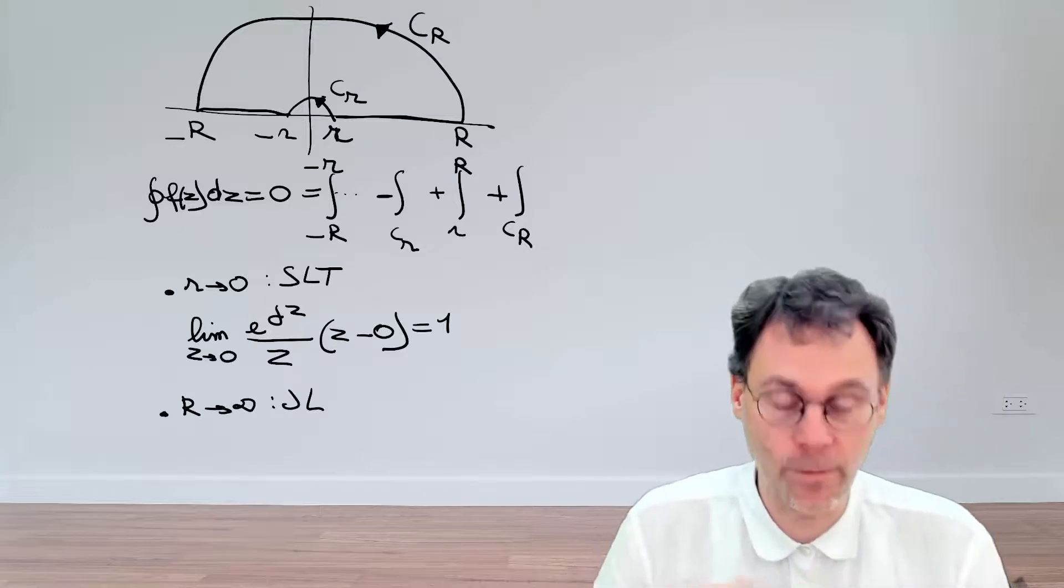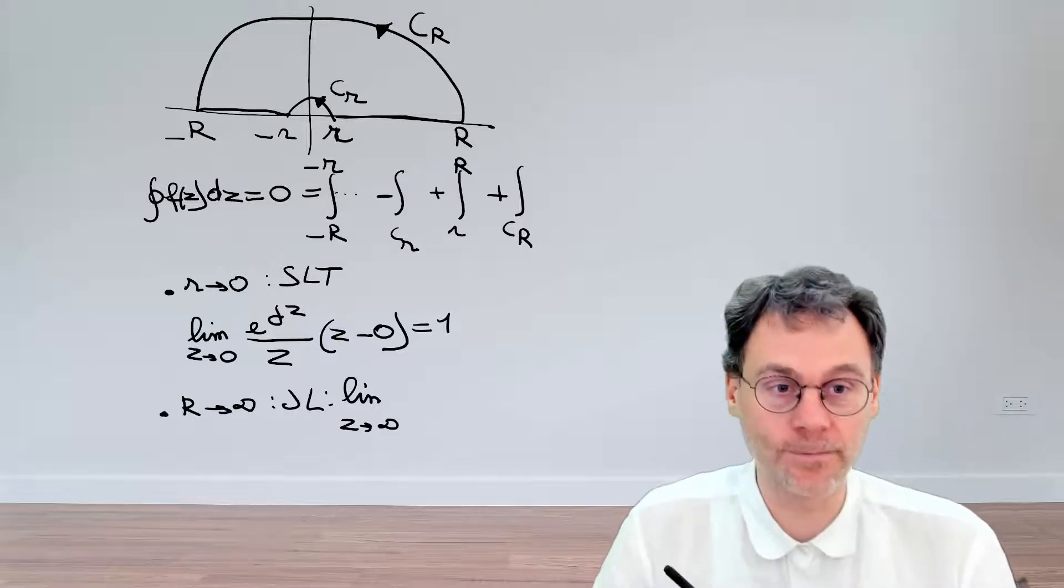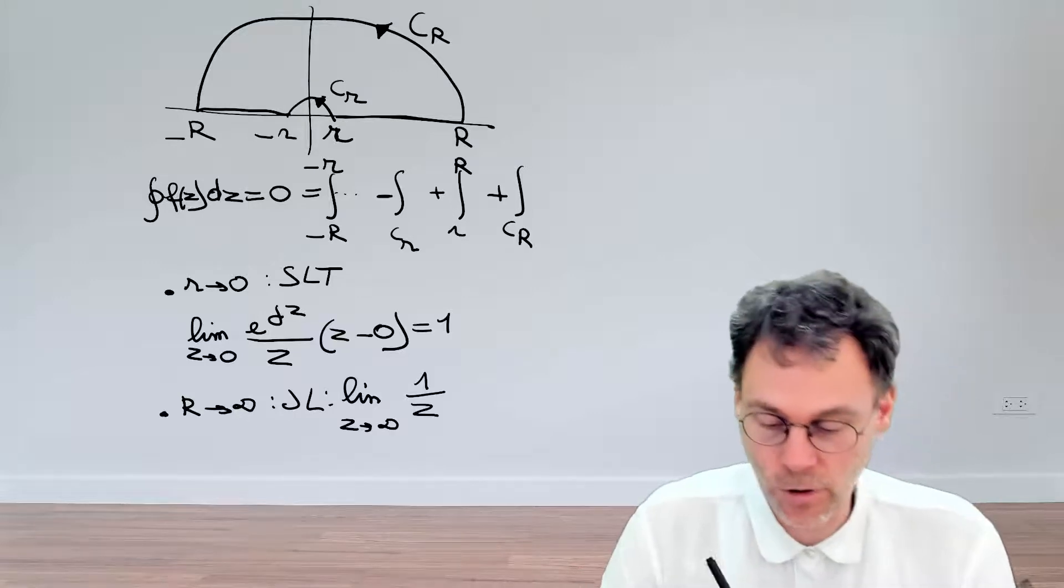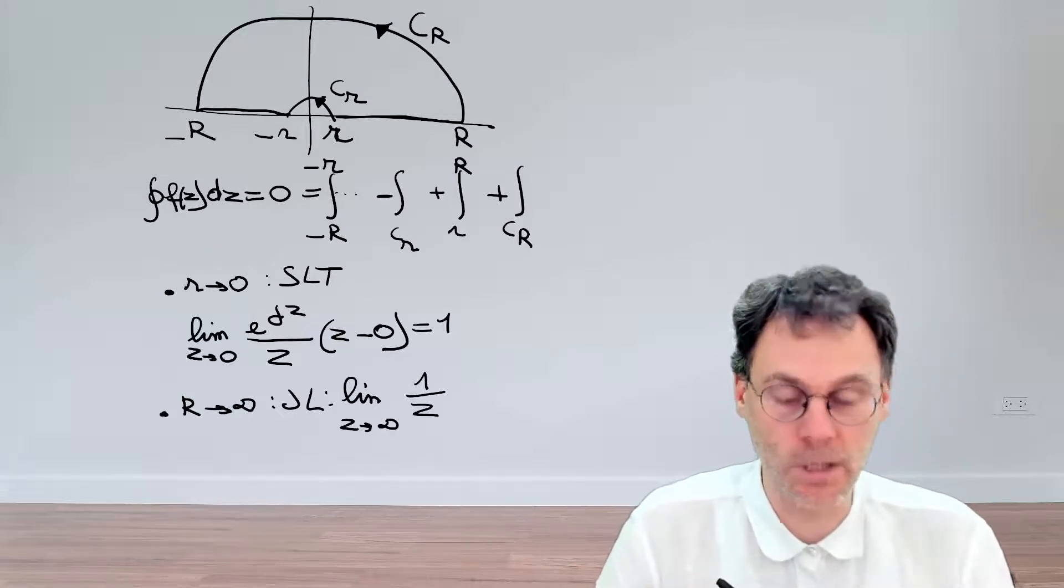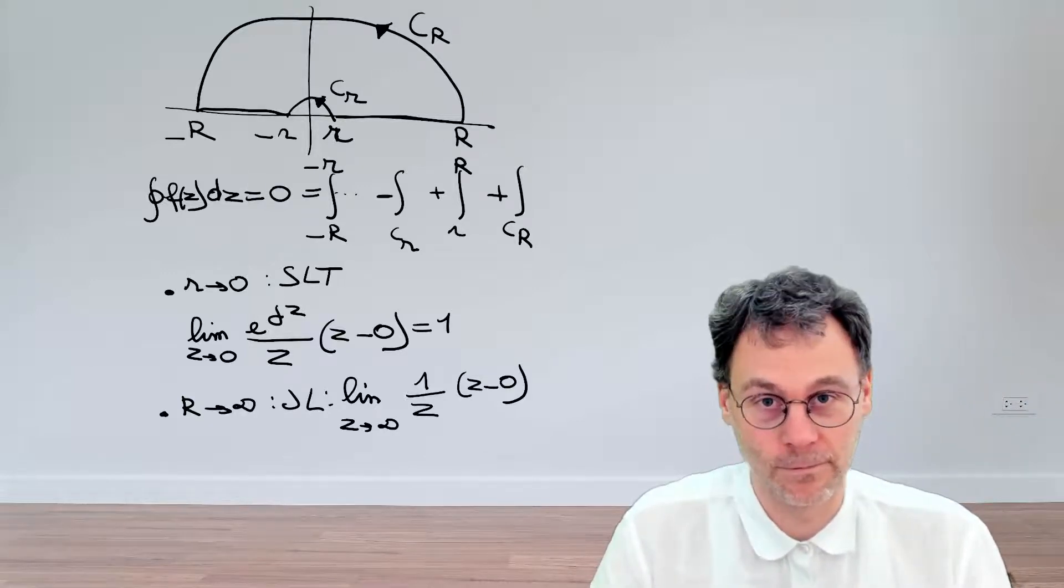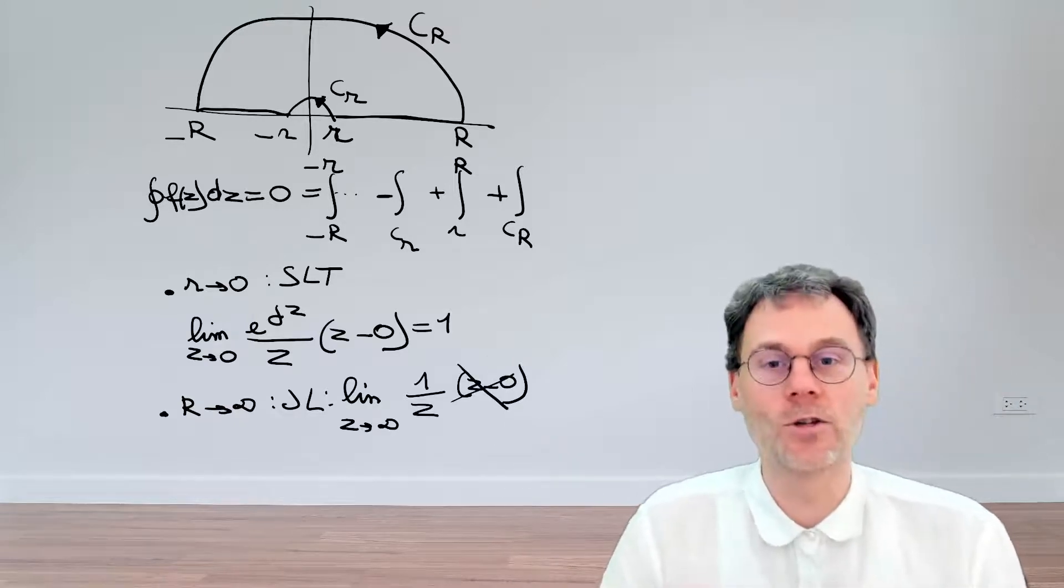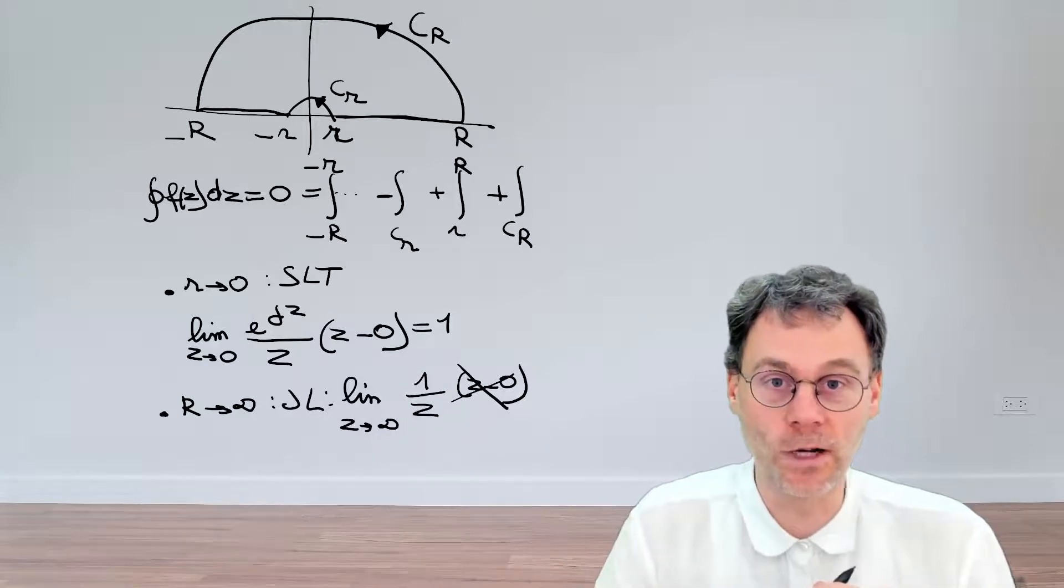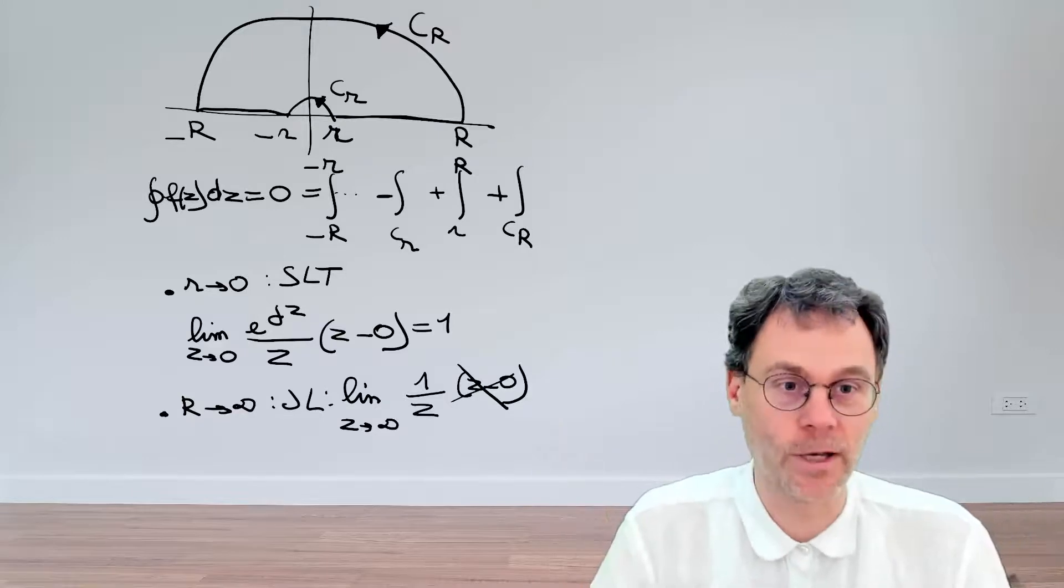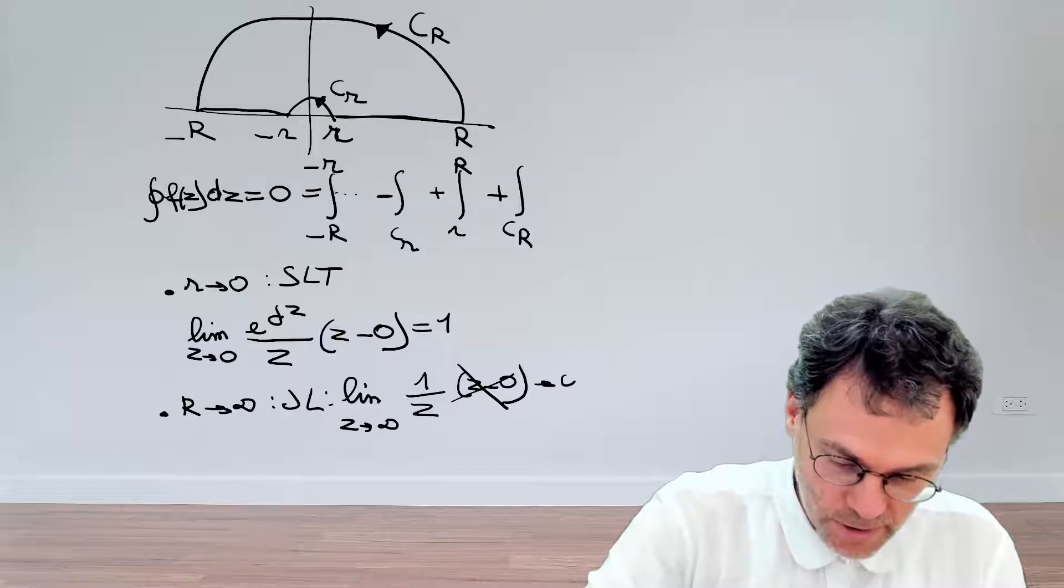So for Jordan's lemma, there's another limit we need to consider. Limits at infinity of the integrand minus the exponential, let's say, or modulo the exponential. So that's 1 over Z. And then we have a Z minus Z naught, right? Wrong again, because in this case, we do not need such a factor. So please do not confuse the limits that you have for these two particular tools. Don't confuse them. Otherwise, you will end up in trouble. In any case, the end result is that the limit is 0.